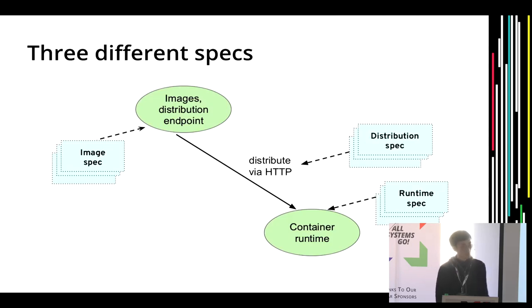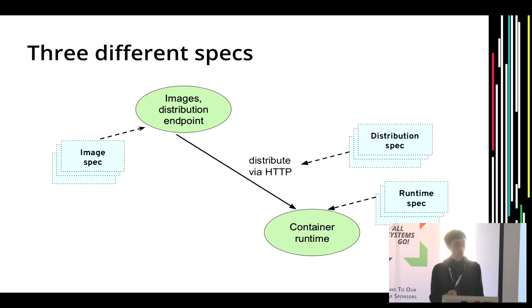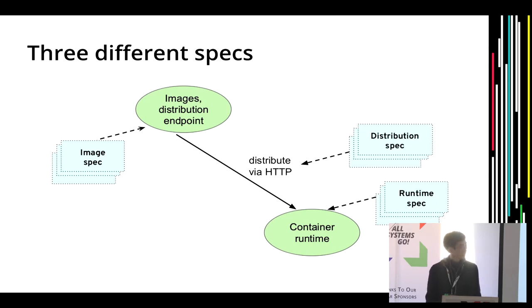Let me show an example. Think about the scenario where you download a Docker image using Docker pull. First, the images should be available on the HTTP server — you can see the image distribution endpoint. On the container runtime side, after pulling the image, you can run the container. Image spec is about how images are built on the server side, runtime spec is about how downloaded images are actually run on the client side, and distribution spec is about transferring the data via HTTP protocols.